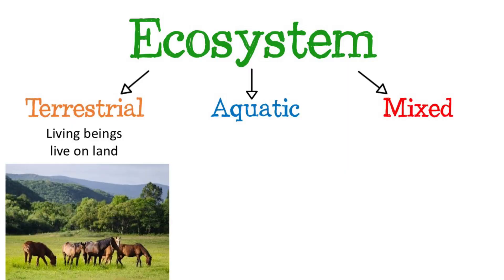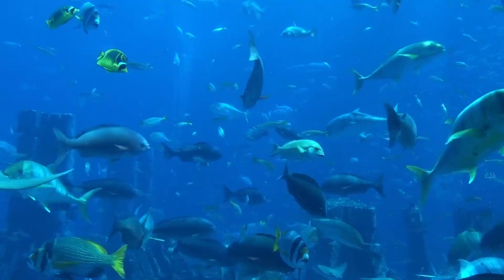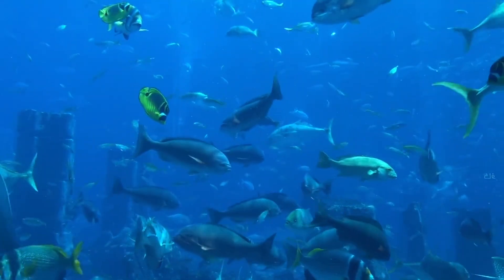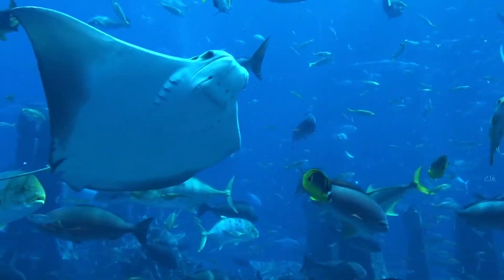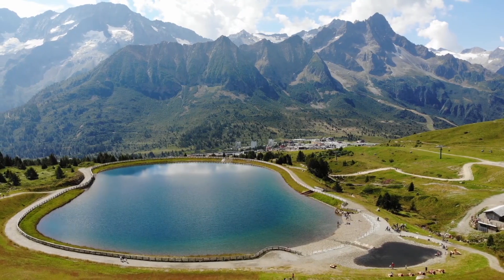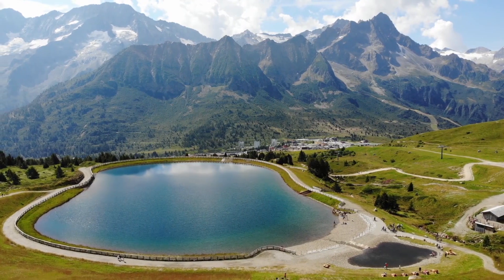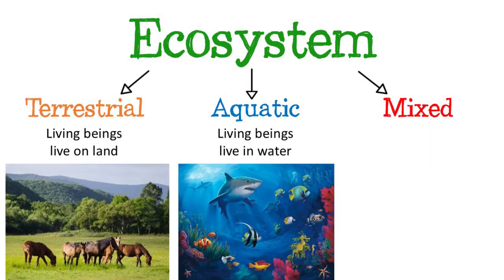In aquatic ecosystems, all the living beings that inhabit it live in water. Aquatic ecosystems can be salt water, such as seas and oceans, or they can be fresh water, such as rivers or lakes.